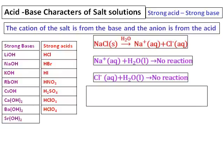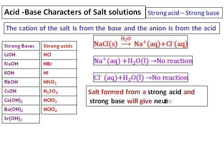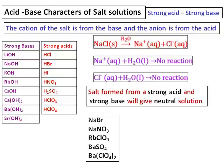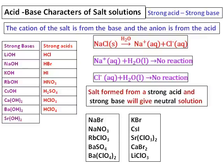Both the sodium ion and chloride ion will have no reaction with water. Therefore, I do not get any hydrogen or hydroxide ion in solution. Hence, a salt formed from a strong acid and strong base will always give a neutral solution. To identify such a salt, you must memorize the 8 strong bases and 7 strong acids. If a salt's cation belongs to the strong base table and its anion belongs to the strong acid table, then that salt will give a neutral solution.